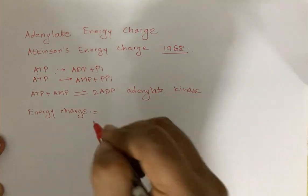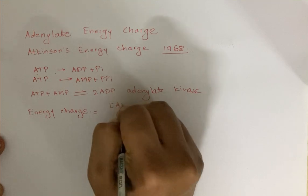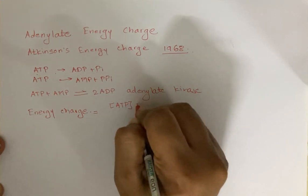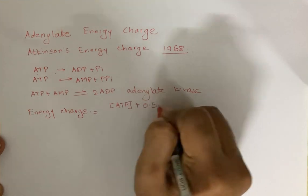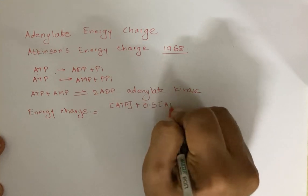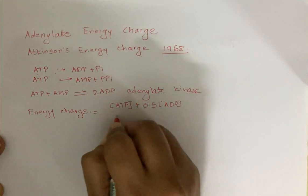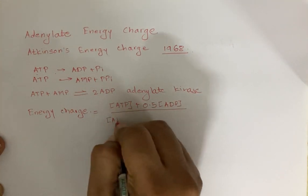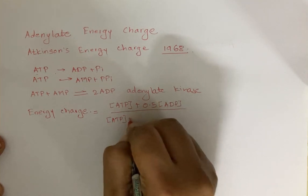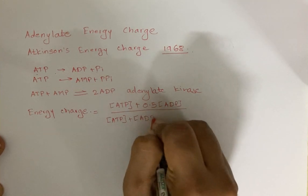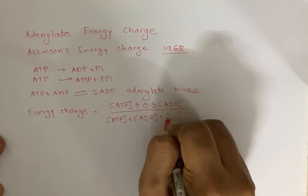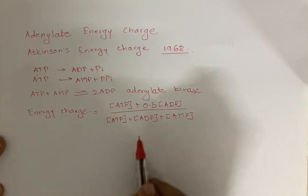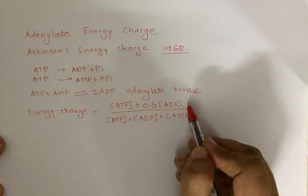The energy charge ratio is: the concentration of ATP plus half the concentration of ADP, divided by the total concentration of ATP plus ADP plus AMP at any given point.